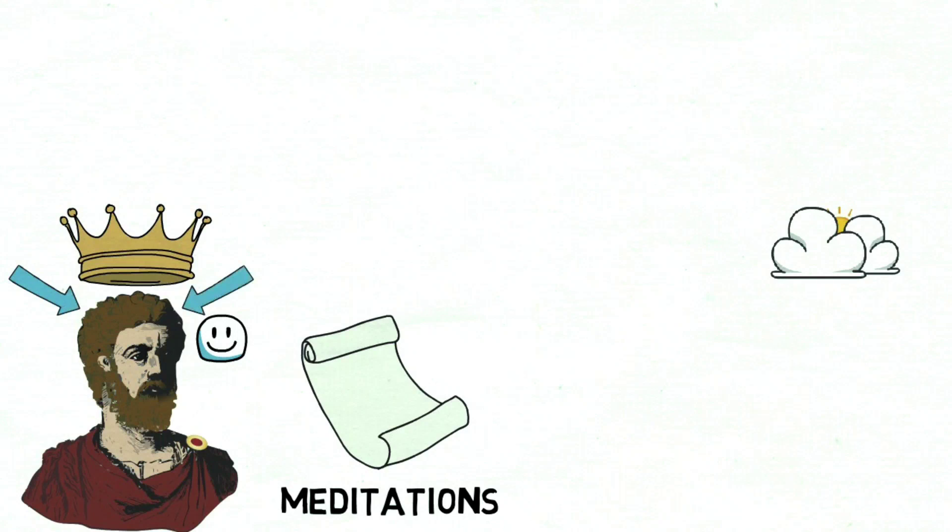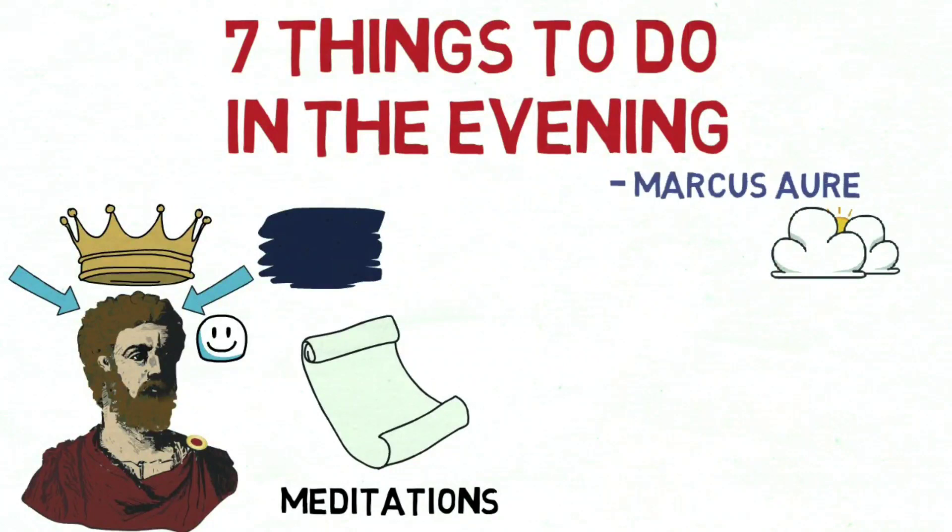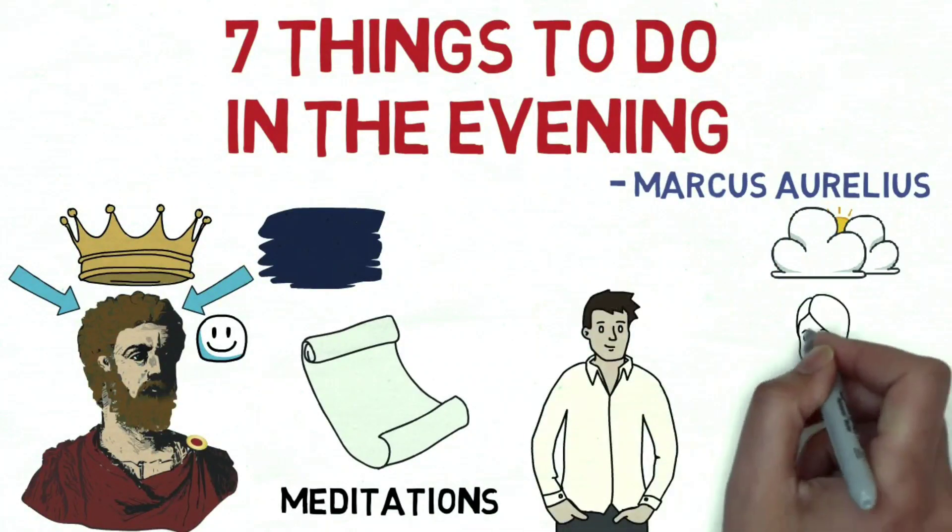Thanks to his journaling, we have a fair idea of what his evening routine would have looked like, and in this video we will be diving into seven different things Marcus Aurelius would have done in his evenings and how we can follow or adapt that routine to our modern-day lives.